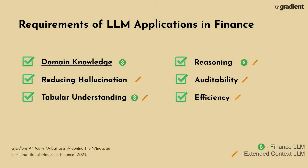For those solutions, two components have been incredibly useful. One is our domain-specific finance language model, and the other is a context length extension that we've worked on. A little while ago, we wrote down six requirements for finance applications of language models that generalist models tend to fall short on. Today, I'm just going to talk about two of them — the ones paired with those two solutions: the finance language model and the extended context length.